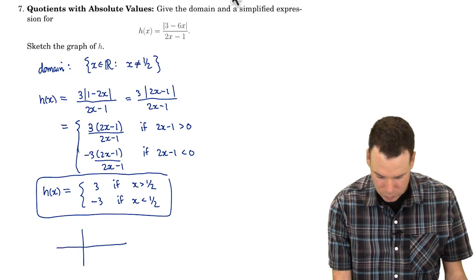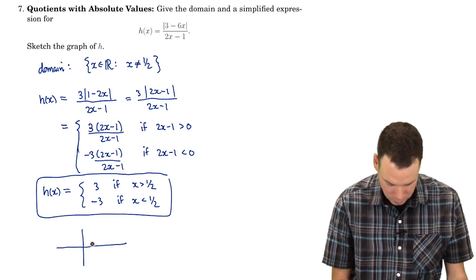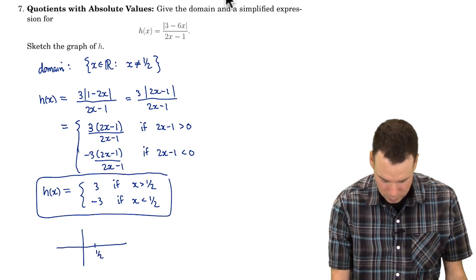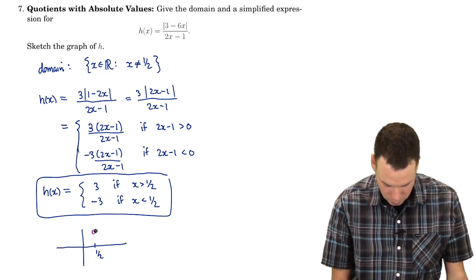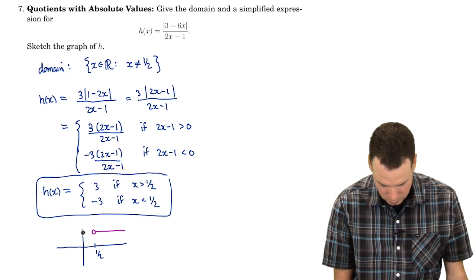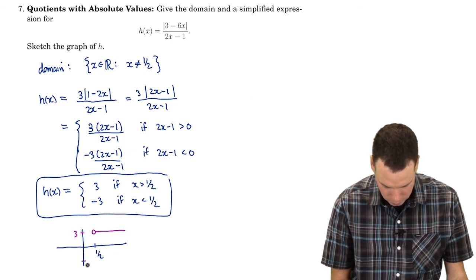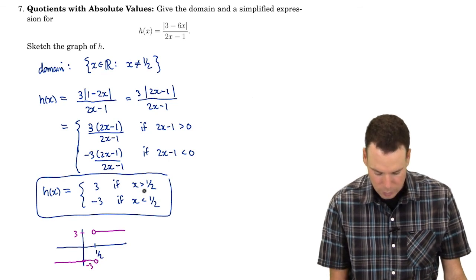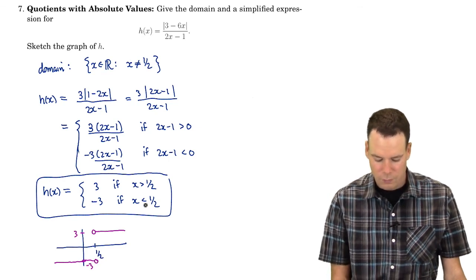So our function looks like this. If this is a half then it's either 3 or negative 3.